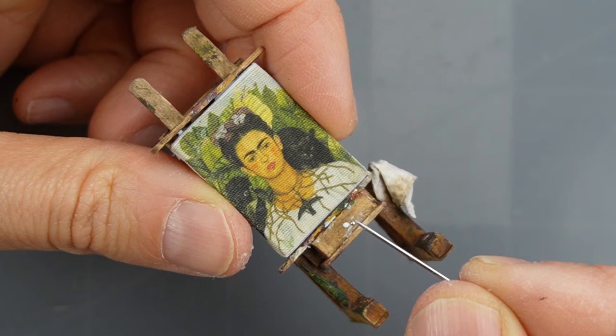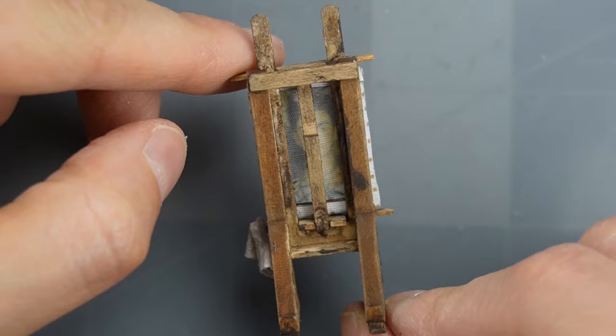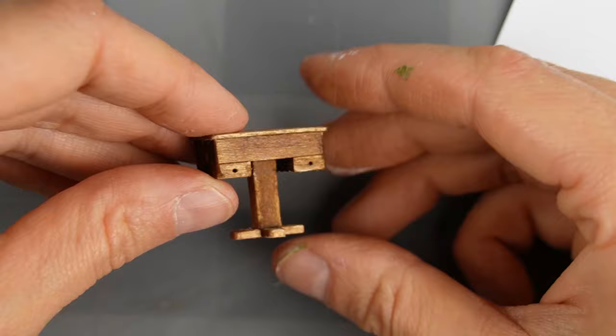The kit includes some beads to use as knobs, so I glued one in place. I love how used and old this easel looks, so now I'm moving on to accessorizing the desk.